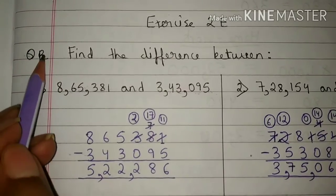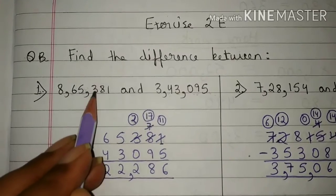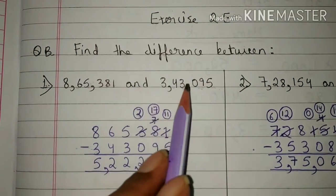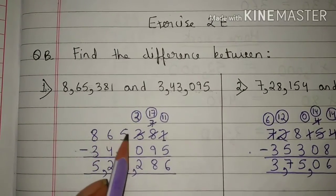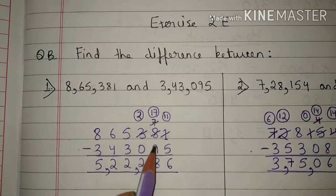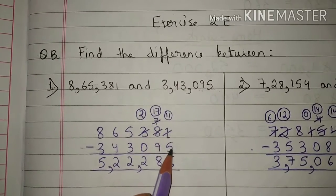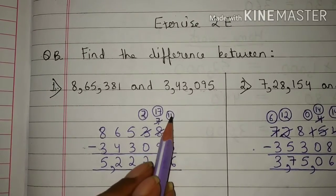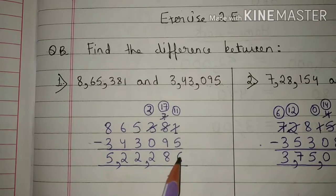Now come to question B: find the difference. First question: 8,65,381 and 3,43,095. We will arrange these numbers in proper columns. We will write 8,65,381 here and 3,43,095 here. Now we will subtract the numbers. One is smaller than five, so we will borrow one number from eight to one. Now one will become eleven and eight will become seven. Eleven minus five is six.